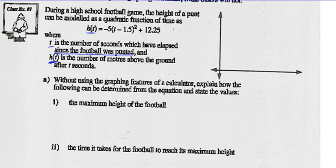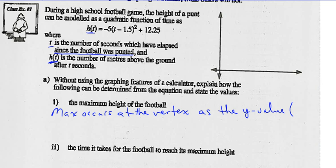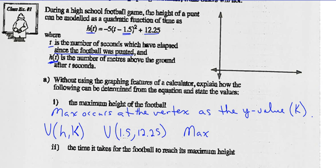How can I figure that out from the equation? Well, we know the max occurs at the vertex as the y value. Or we know the y value of the vertex is k. Recall the vertex has the coordinates h and k when the equation is in the form as it is up above. So if I know my vertex occurs at h, which is 1.5, and k, which is 12.25, then I calculate the max is at 12.25 meters.